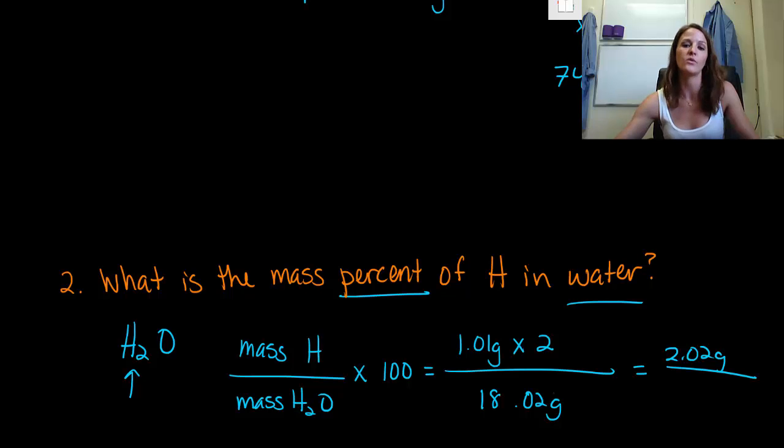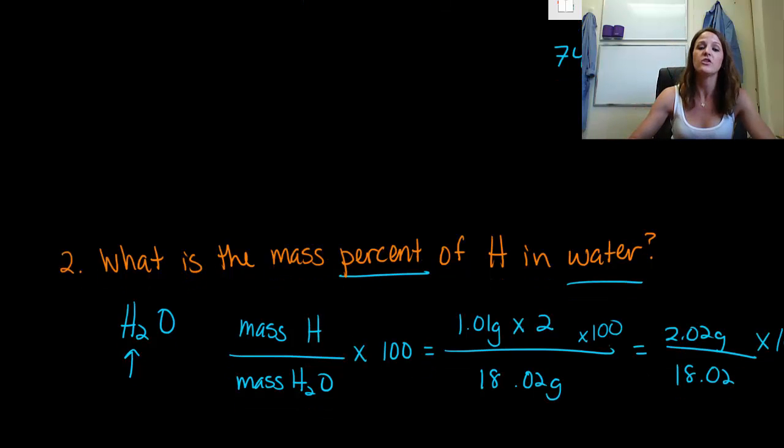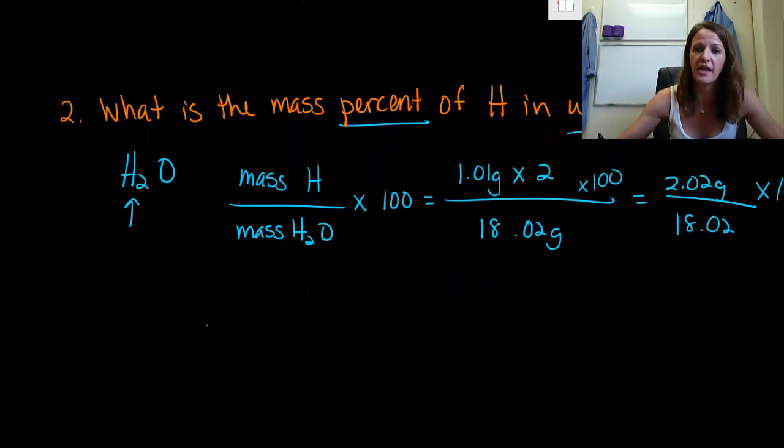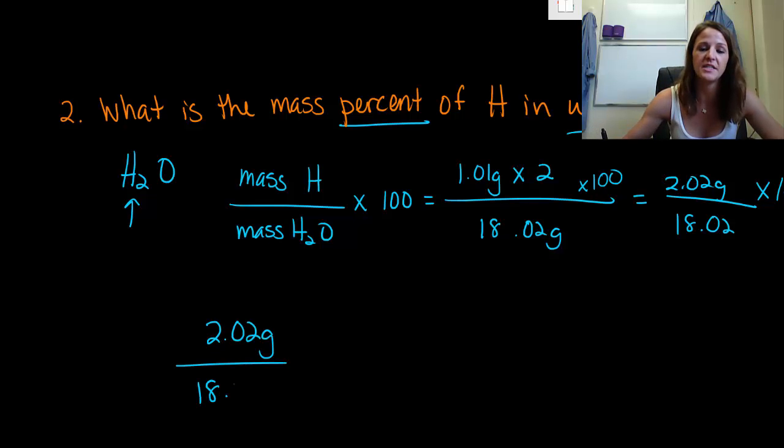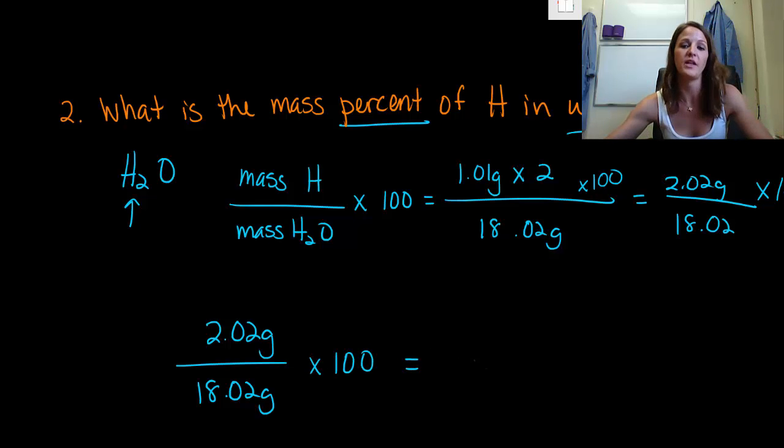So our total thing at the very end becomes 2.02 divided by 18 times 100. Let me make sure I put this in here too, times 100. So if we put this down here and actually multiply that out, man, that got a little messy. So we have 2.02 grams divided by 18.02 grams, multiply times your 100, and if you do this properly, you get something like 11.21 percent, which is really just saying that out of all of water, about 11 percent of that is comprised of our hydrogen atoms.